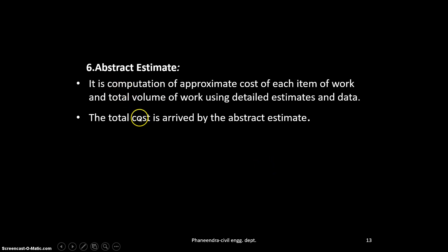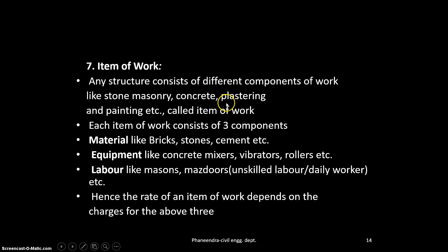Abstract estimate: Q into R plus building charges. Total cost of items of work - we already discussed items of work. Item of work contains stone masonry, concreting, plastering, painting. Each item of work has three components: material like brick, stone, cement; equipment like concrete mixers, vibrators, rollers; and labor like masons. The rate of an item of work depends on the charges of these three components.